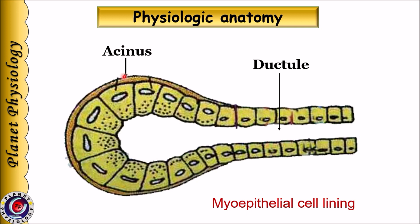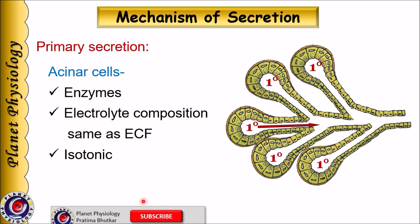Acini are lined by myoepithelial cells. Myoepithelial cells are concerned with contraction of the acini, which helps in squeezing the contents from the lumen of the acini into the ducts.